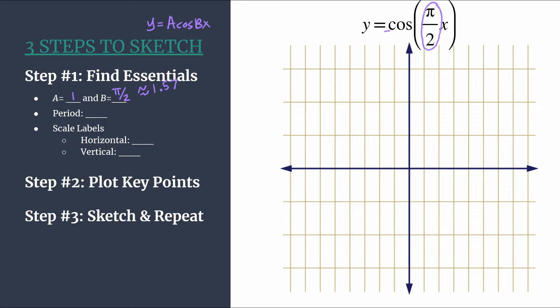So when we're thinking about b, remember it tells you, first of all, how many cycles happen between zero and two pi. And then secondly, it helps you find the period. So let's do that now. Our period should be two pi divided by b. So we have two pi divided by pi over two. So that's really multiplying by two over pi.